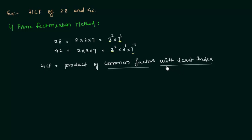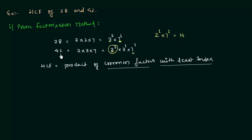Now we find the common factors with the least index. Comparing 2: we have 2² and 2¹, so 2¹ has the least index of 1. For 7: we have 7¹ in both cases, so 7¹ is the common factor with least index. Therefore 2¹ × 7¹ = 14. So HCF of 28 and 42 is 14.